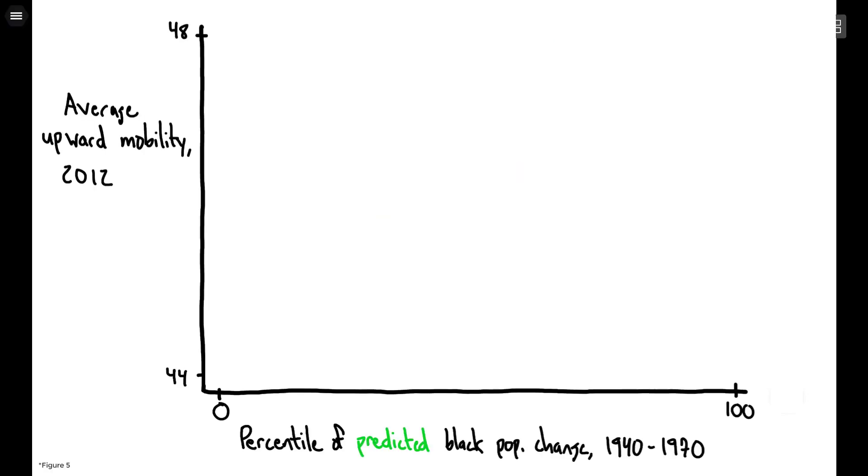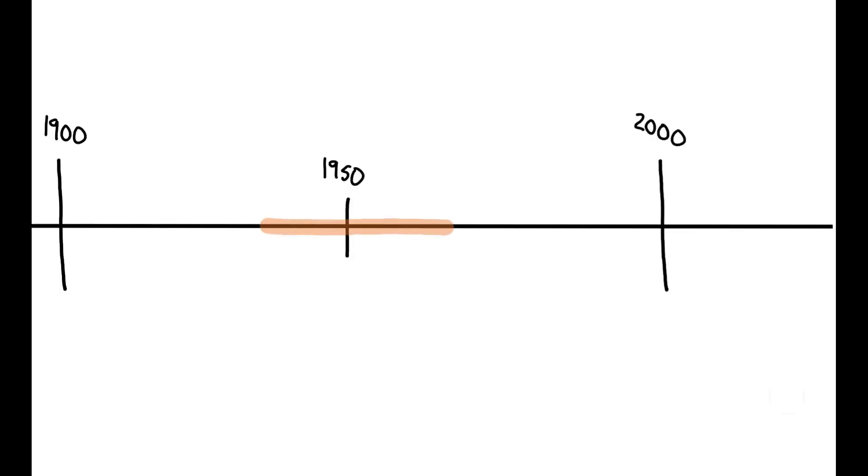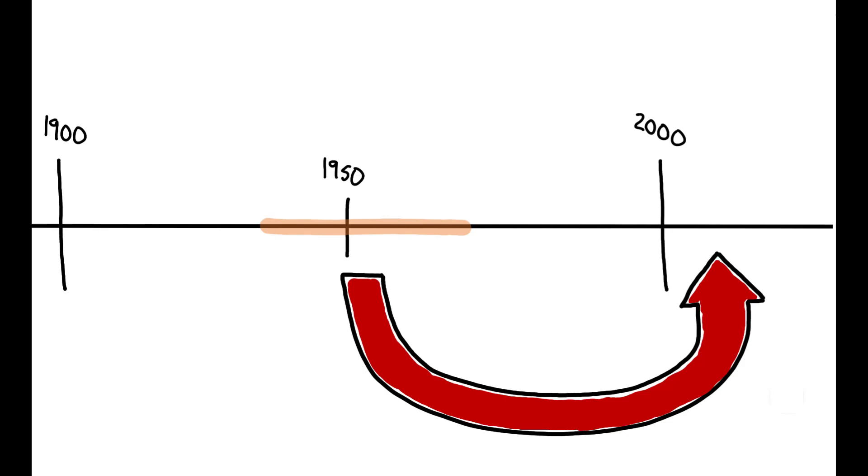Using this strategy, the author shows that there is a strong negative relationship between exposure to Great Migration inflows and measures of upward mobility today. In other words, mid-century shocks to the racial composition of northern cities lowered the average outcomes of children growing up in the same area decades later.